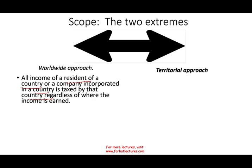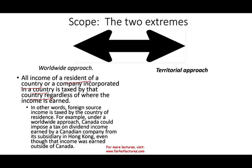Simply put, if you are a resident of that country or if your company is incorporated in that country, it doesn't matter where you make your money. If you are a US company, the US will tax you. Foreign source income is taxed by the country of residence. For example, under the worldwide approach, Canada can impose a tax on dividend income that a Canadian company earned in Hong Kong — Canada has the reach to tax that income.